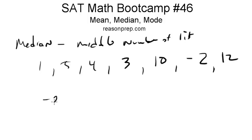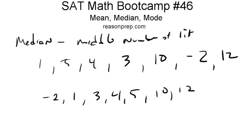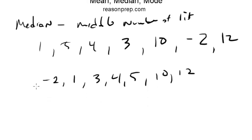So negative 2 would be first, then 1, 3, 4, 5, 10, 12. And then we just have to find the middle number of the list — that is our median. There are 7 numbers, so the middle number is going to be the one right in the middle, the odd one out.